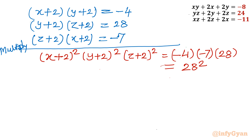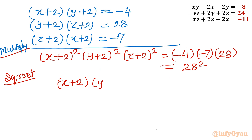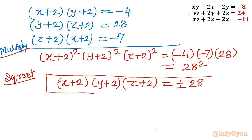Let us take the square root of both sides. So (x plus 2)(y plus 2)(z plus 2) equals plus or minus 28. This is equation number 7, the most powerful equation in this problem solving.